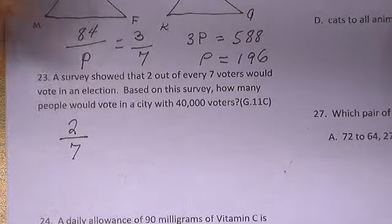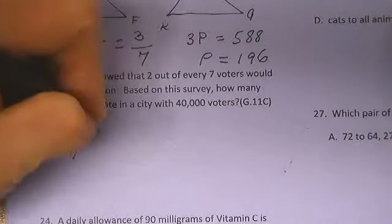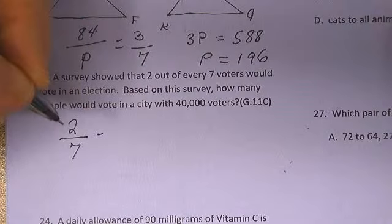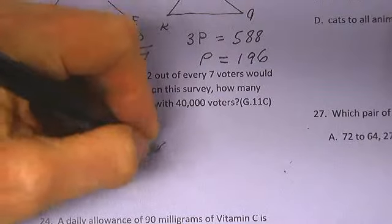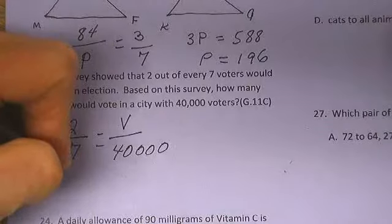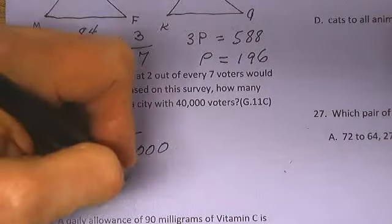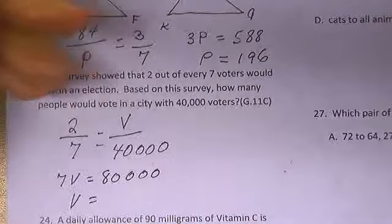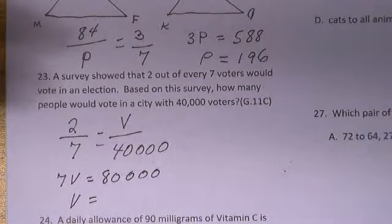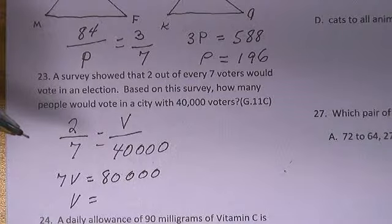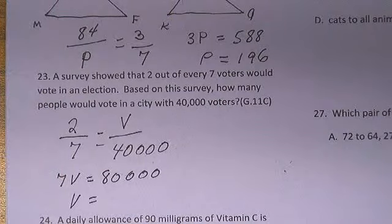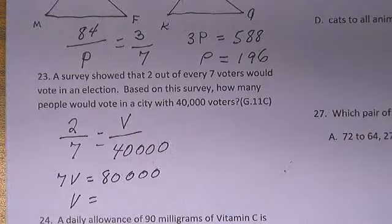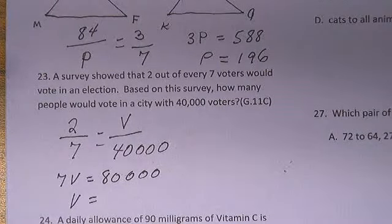Two out of every seven voters vote in an election. Seven V equals 80,000. V equals 11,429.